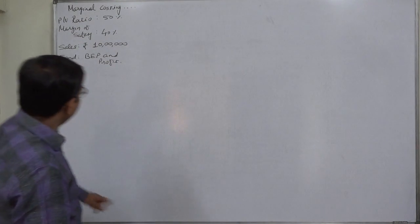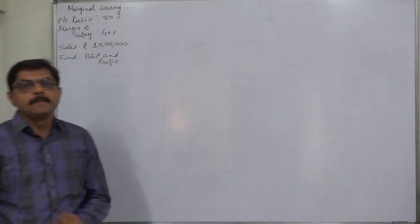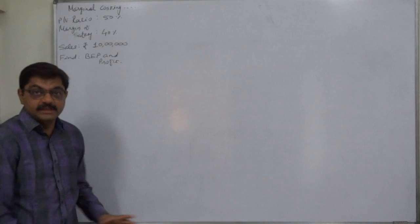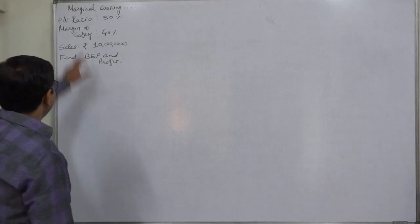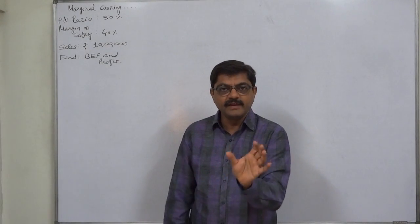First of all, whenever anything is expressed as percentage, there must be some base of the percentage. That means percentage of what? PV ratio is 50% but PV ratio 50% of what?